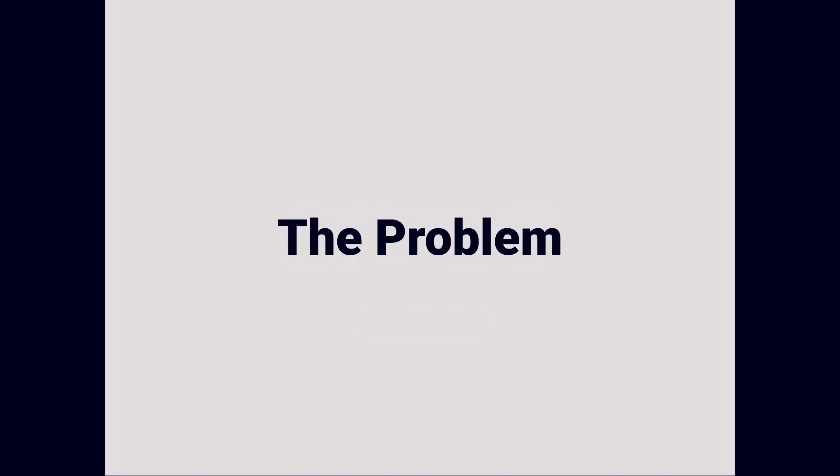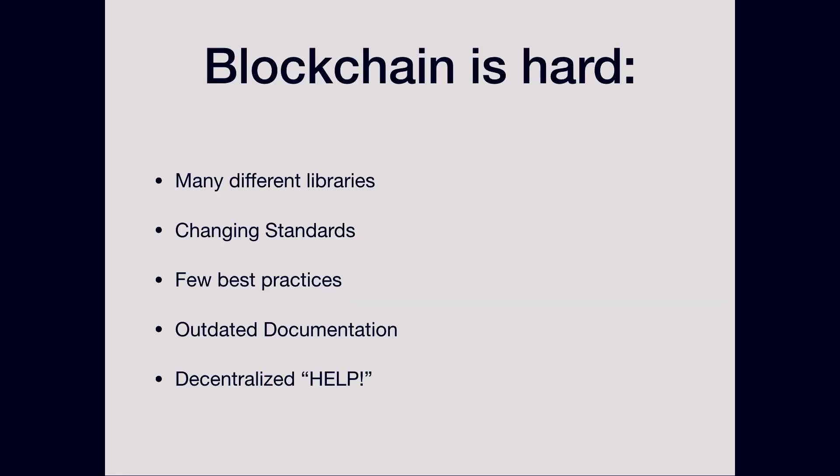Basically, what is the problem today when we think about interacting with Web3, when we think about interacting with smart contracts, when we think about interacting with the future? The biggest thing is blockchain is hard. Blockchain has many different libraries. There's changing standards, few best practices, outdated documentation. And getting help is also decentralized, which sounds cool, but when you're in a tricky spot, it's very difficult to understand where to go to get help.